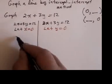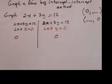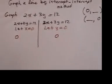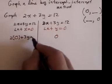So wherever I see the letter X, I'm going to put a zero. Wherever I see the letter Y, I'm going to put a zero. So here's what the equation looks like: 2 times zero plus 3Y equals 12.